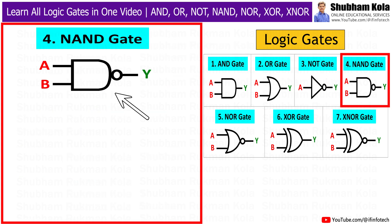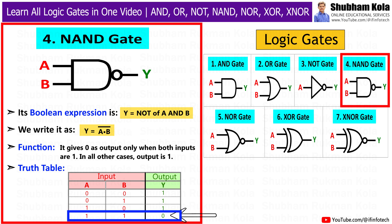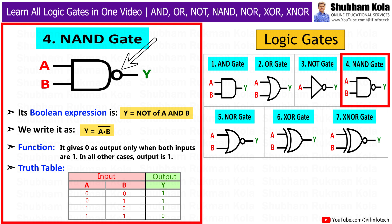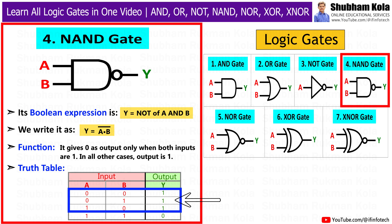The next gate is the NAND gate. It is a combination of the AND gate and NOT gate. Its Boolean expression is y = NOT (A AND B), written as y = A · B bar. It gives 0 as output only when both inputs are 1; in all other cases, output is 1. It looks like an AND gate with a small circle at the output. In the truth table, if A and B are both 1, the output is 0; for all other combinations, output is 1.